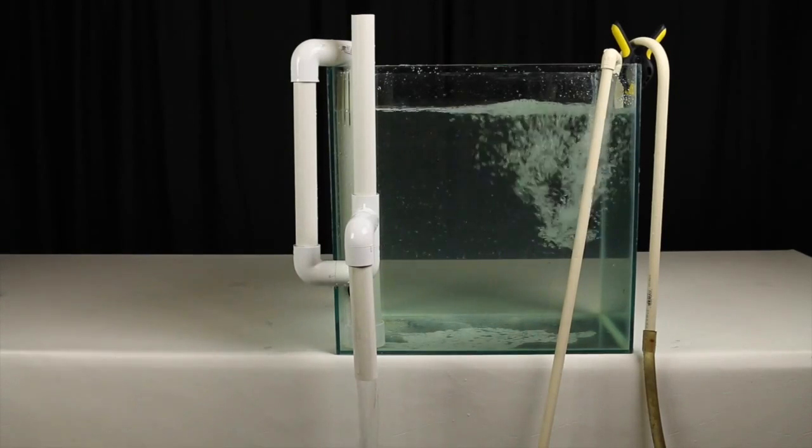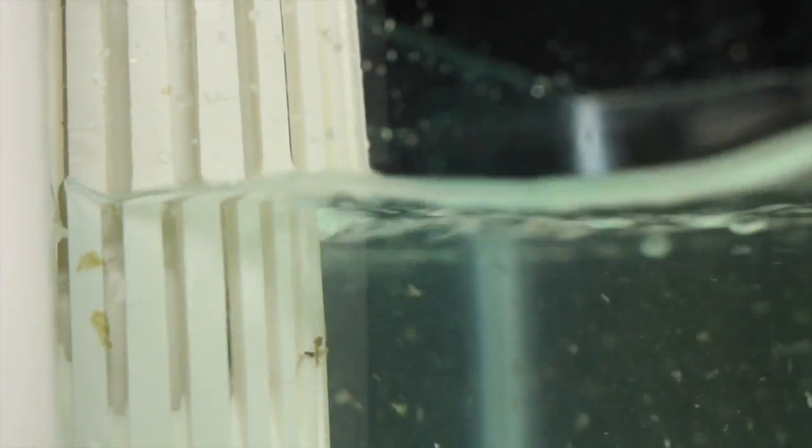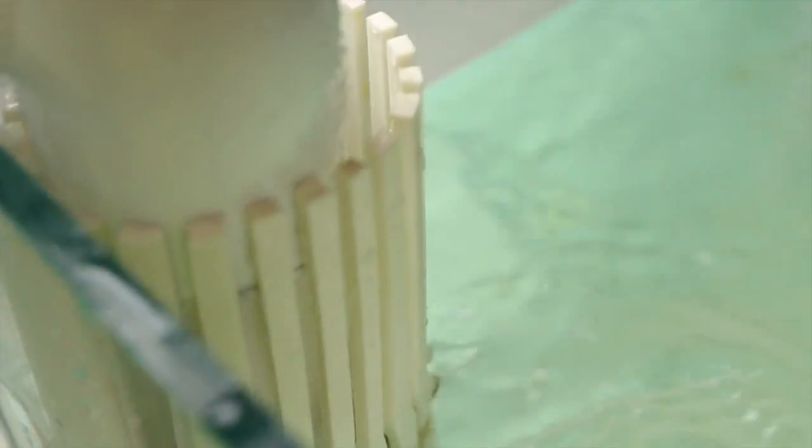One thing to look for with a weir though is how far the water is falling into it. You want to aim for it to be falling by about one inch. Anything more and the teeth or holes are too small. Anything less and you might not be skimming the water surface at all. So make sure you start off smaller and do some testing.